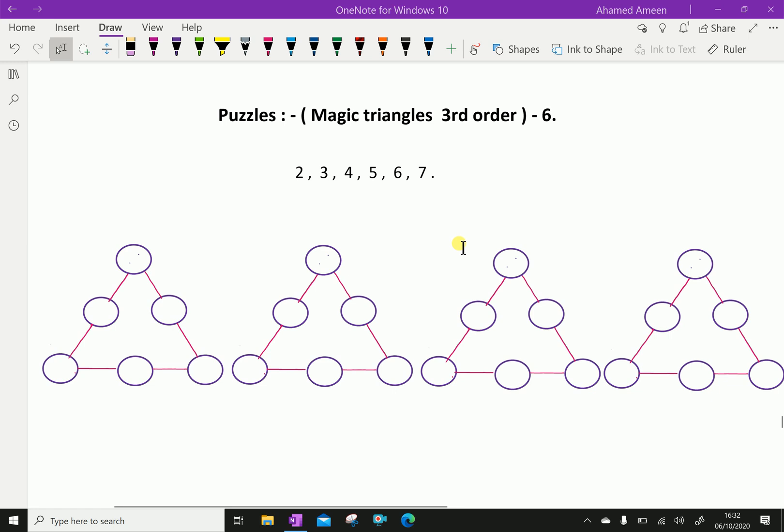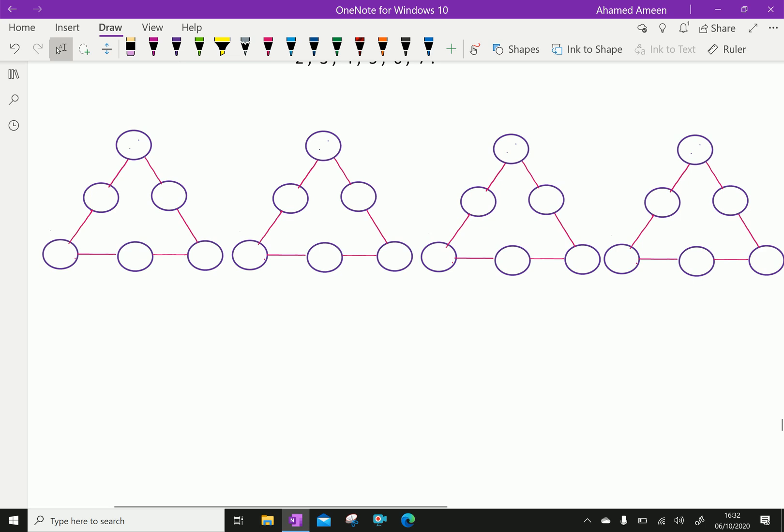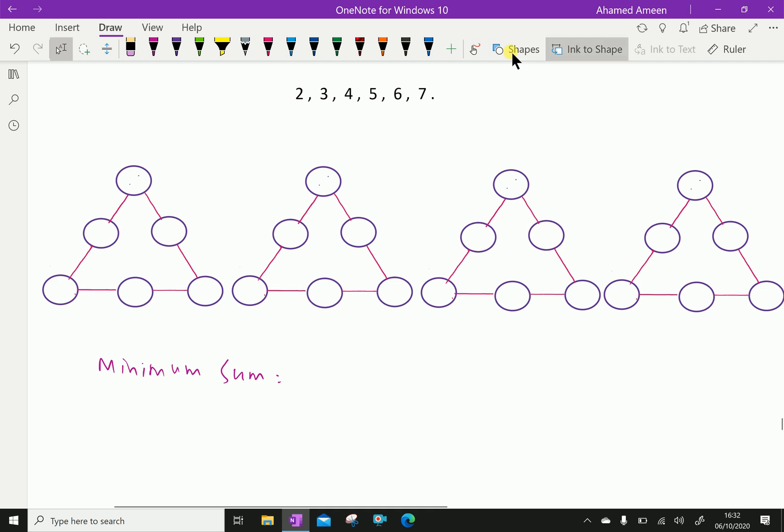Now first we will create our own magic triangles. For that you have to find first the minimum sum. For minimum sum you have to get the last number 7 and first two addition: 2 plus 3 equal 12.